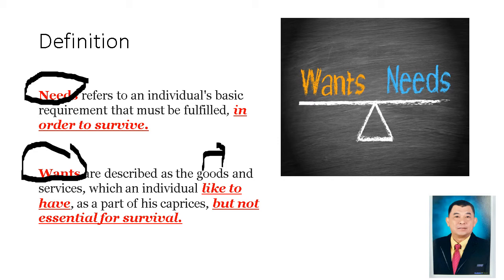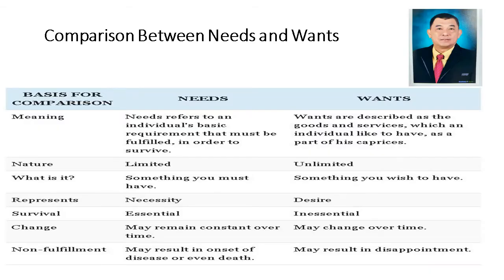Let us try to understand the comparison of these needs and wants. Wants refer to something nice to have or good to have, but as mentioned, not essential for survival. For the purpose of spending and saving money wisely, every person must know the difference between needs and wants. We have a comparison between needs and wants with the following attributes: definition, nature, what it is all about, what it represents, survival, change, and non-fulfillment.